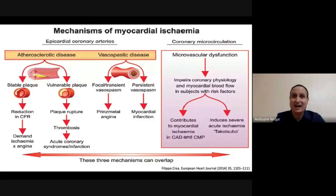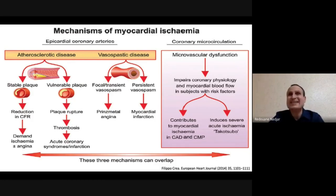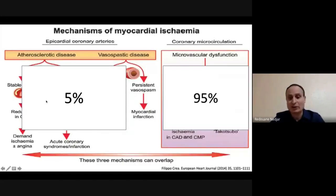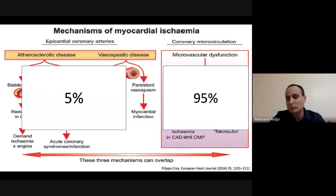Ce qu'on voit en angiographie ne représente que 5% du réseau coronaire, alors que la microcirculation représente quasiment 95% de l'arbre coronaire. Il n'est donc pas du tout légitime de l'ignorer dans les phénomènes de coronaropathie. Ceci a été reproduit dans les dernières recommandations sur la prise en charge des INOCA : le versant épicardique avec l'athérosclérose, que ce soit pathologie chronique ou aiguë, et la microcirculation qui peut donner de l'ischémie myocardique.